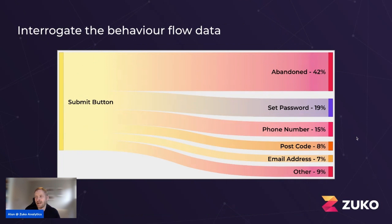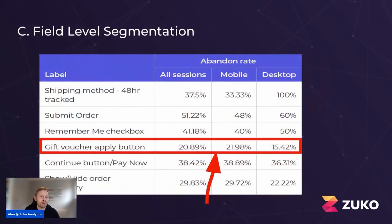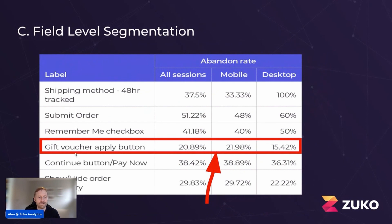The final technique is field-level segmentation. It's really important to look at all your data on an individual field level against different audiences. A very common example is looking at device type — you can also do this for operating system, browser, traffic source, or anything pertinent. In this case, we're looking at abandonment rates — the percentage of people who drop out on a particular question — for an e-commerce checkout. We're looking at the gift voucher apply button: the button people click once they enter a discount code.